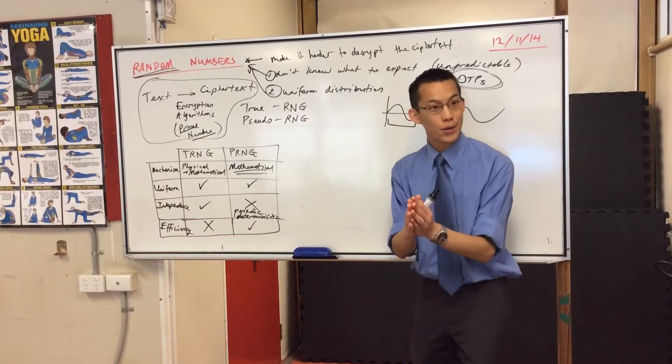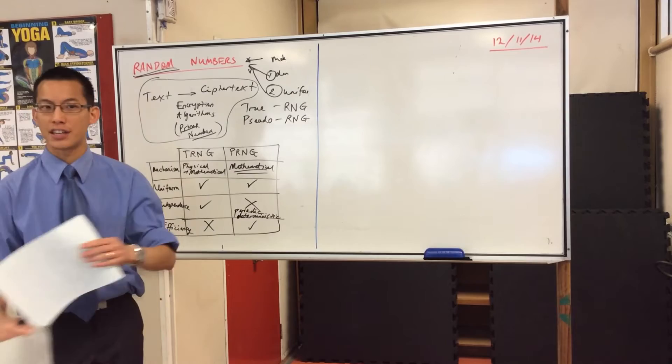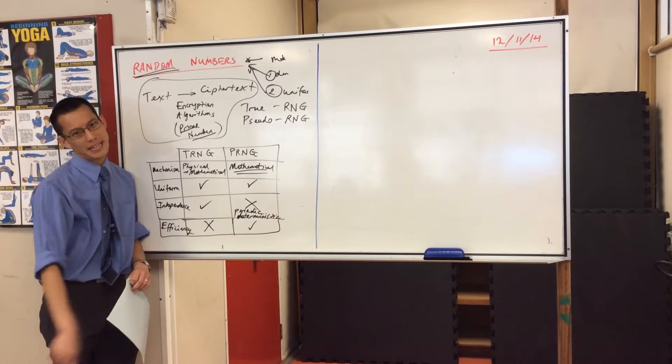So let me show you a pseudo random number generator. By the way, just to give you some examples, we said dice and coins for this but that's a bit pedestrian, right?